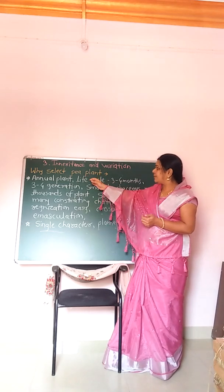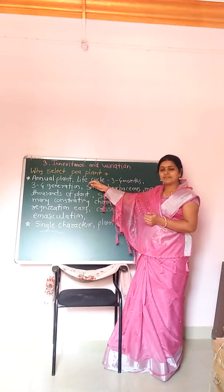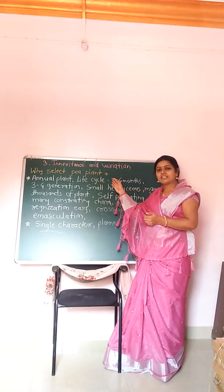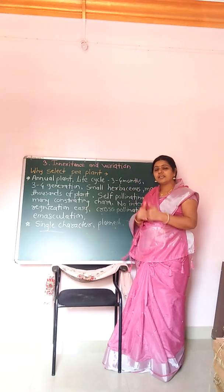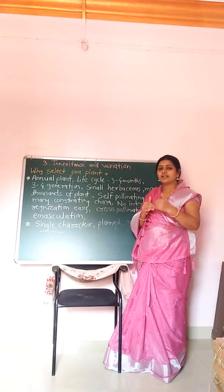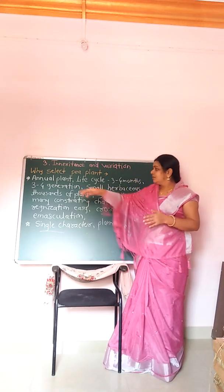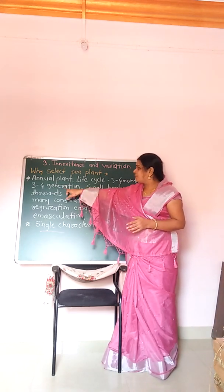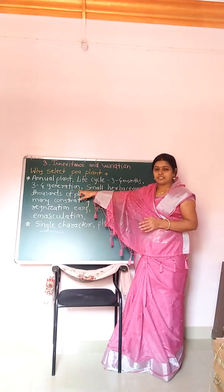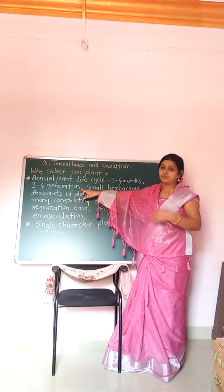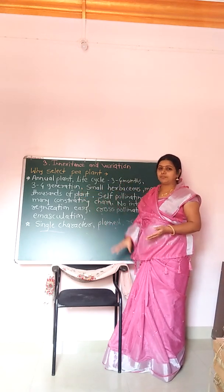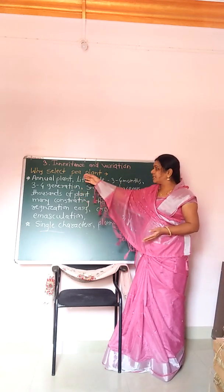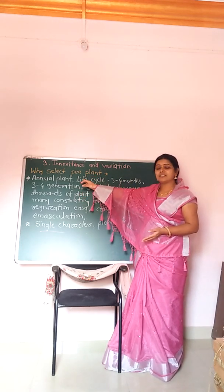The garden pea plant's life cycle is three to four months, and in a year there are three to four generations of garden pea plants that can grow. This is one reason why Mendel selected the garden pea plant.